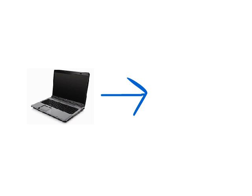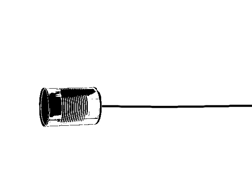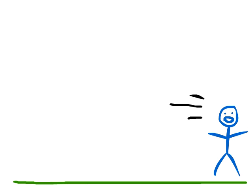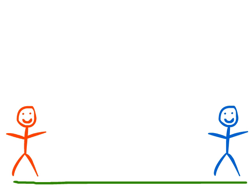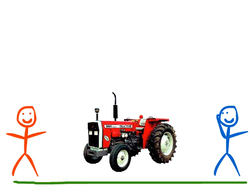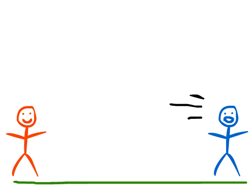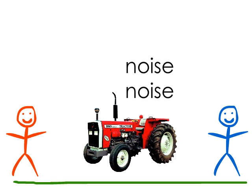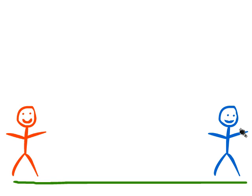So you are a computer again, and instead of talking through a can on a string, you are trying to yell a message across a field to your friend. You first listen to make sure there isn't a tractor or something making noise, and yell your message across the field. If there was a tractor making noise, you would stop, wait a random amount of time, and try to yell to your friend again.